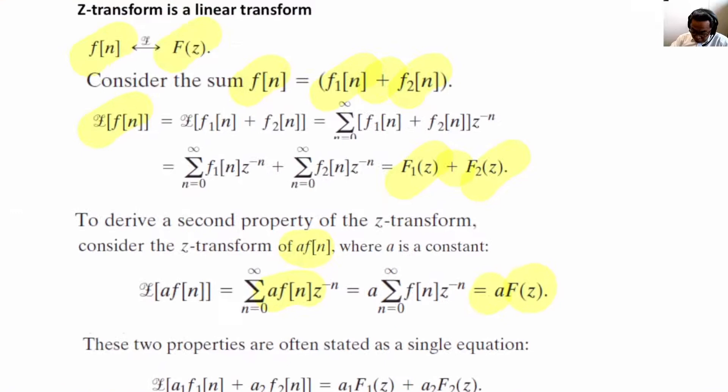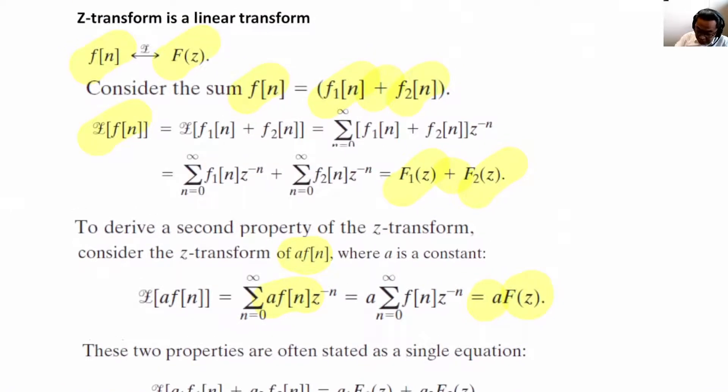So, how to prove this? It is by brute force. What you do is simply, you just sub in. This is Fn, which is F1 plus F2. You open up the Z-transform, and you substitute F1 and F2 into the Z-transform expression.